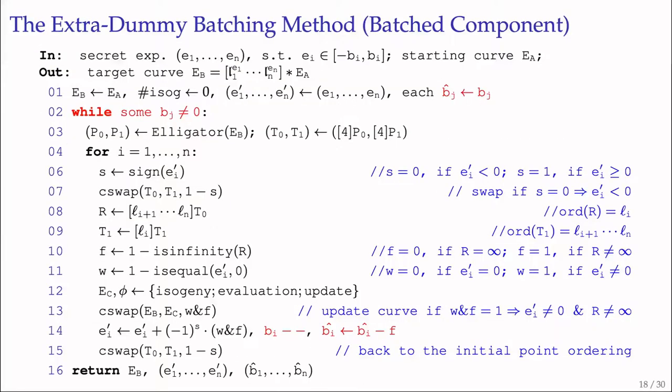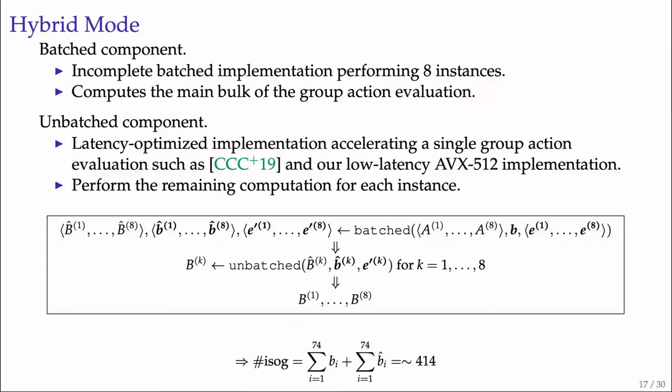To apply hybrid mode to the extra-dummy method, we remove Ci and create a new bound list b-hat. B-hat records infinity cases that happened in the batched component and will be used as a bound list in the unbatched component. Our experiments indicate that for each instance, there are often around 10 isogenies remaining to be computed in the unbatched component. As a result, the total number of isogeny computations is just slightly larger than before. Moreover, since the unbatched component has no failure probability, we conclude our extra-dummy method has no failure probability either.